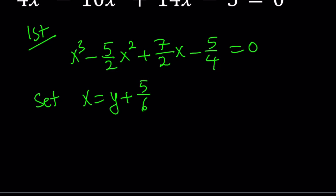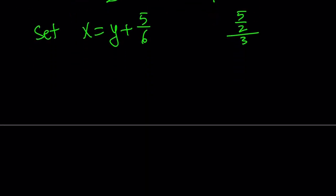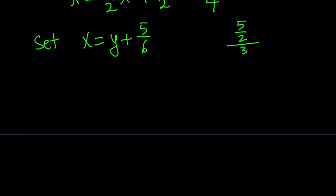Now where do I get that from? You take the coefficient of x squared and you negate it and divide it by 3. The reason why you divide it by 3 is because this is cubic, so you have to divide it by degree. The opposite of negative 5 halves divided by 3 plus another variable is going to give you what to substitute. And when you set x equal to that, the quadratic term disappears. And you get the following, y cubed plus 17 over 12y plus 55 over 108 equals 0.